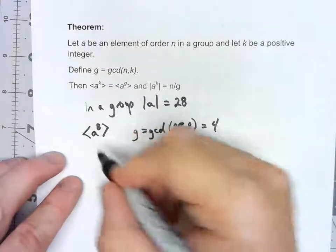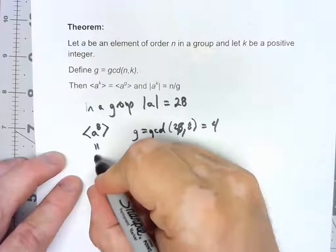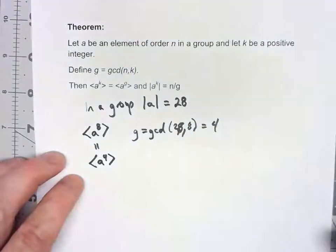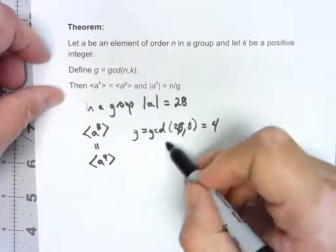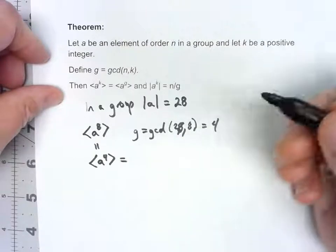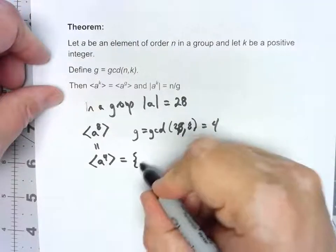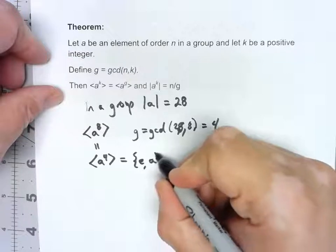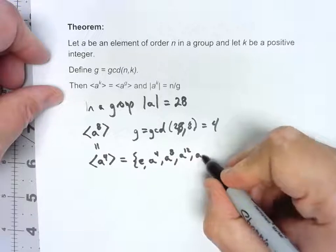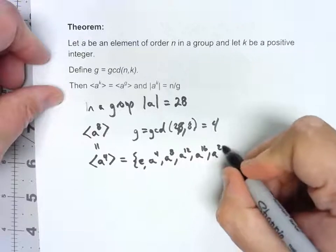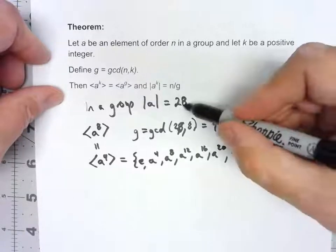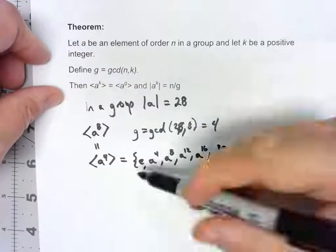So that says the subgroup generated by a^8 is the same as the subgroup generated by a^4. By grading it down to as low as possible by using that GCD, we can then say this is going to have to be e, a^4, a^8, a^12, a^16, a^20, a^24, and that's it because a^28 would be back to the identity.